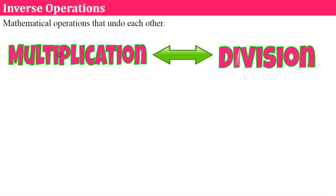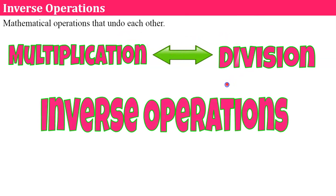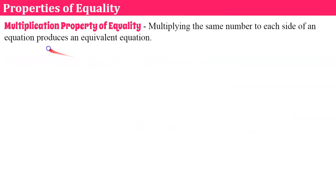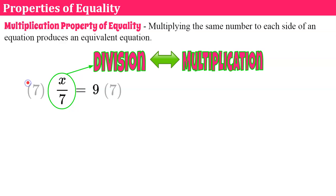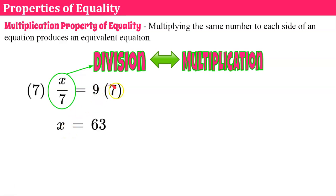Now we're going to talk about more mathematical operations that undo each other: multiplication and division. Multiplication undoes division — these are inverse operations. The multiplication property of equality states that multiplying the same number to each side of an equation will produce an equivalent equation. Here's our equation: x divided by 7 is equal to 9. The inverse of divide by 7 is multiplication, so we multiply both sides by 7. 7 times 1/7 is 1, and 9 times 7 is 63. We check: 63 divided by 7 is 9. It checks.